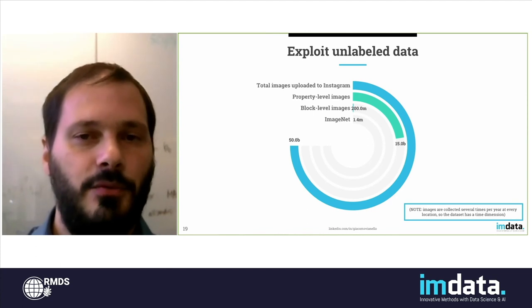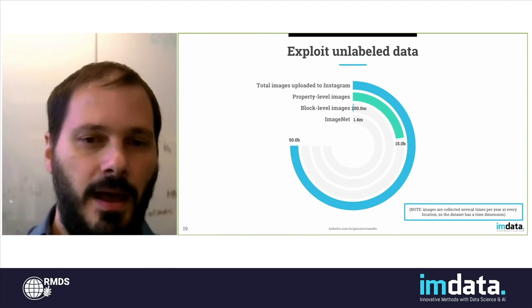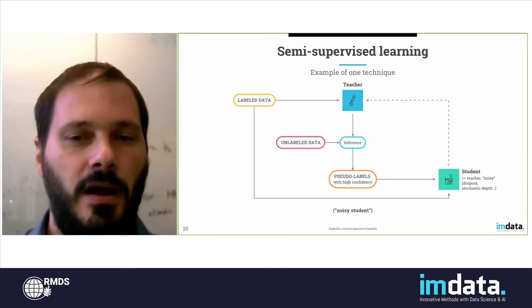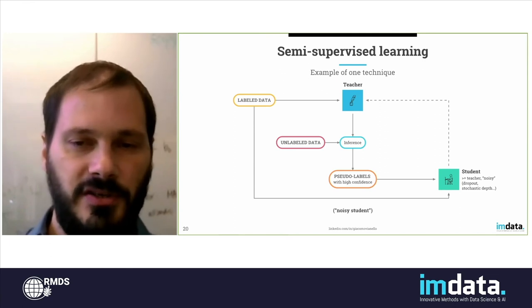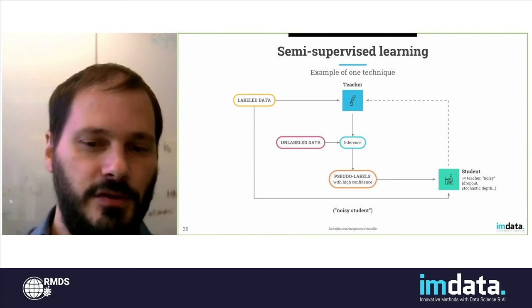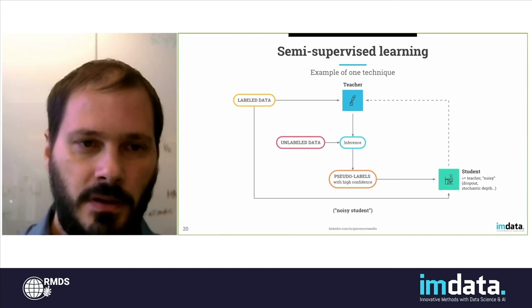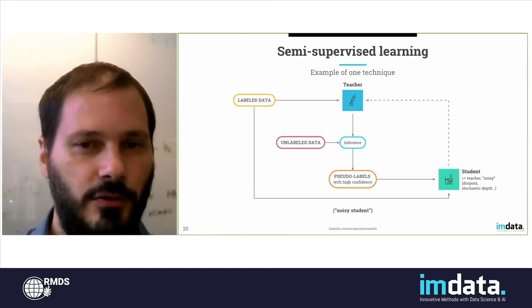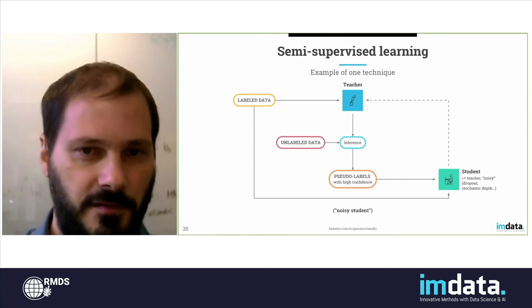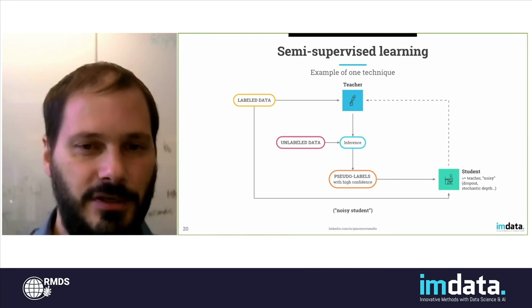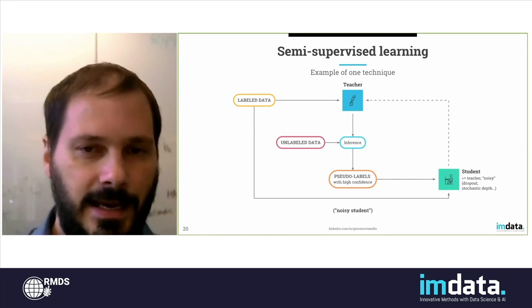The question is how can we exploit this unlabeled data? The answer is semi-supervised learning. This discipline has been around for quite a while, but only recently has it started to reach performance levels comparable to fully supervised settings. One particularly interesting technique is called the noisy student, and it works like this: you start from a labeled dataset and train a model called the teacher using standard supervised learning. Then you use this teacher to perform inference on a much larger unlabeled dataset, just as in active learning, selecting examples where the teacher model is very confident.